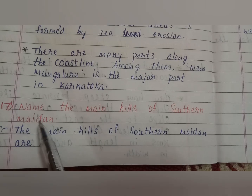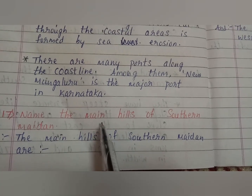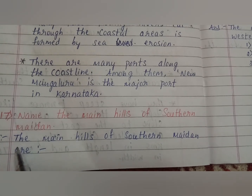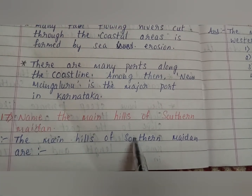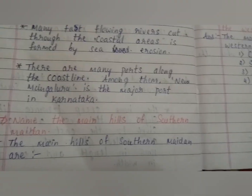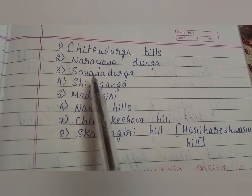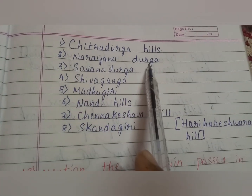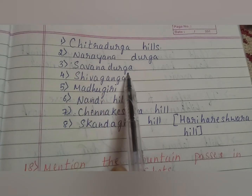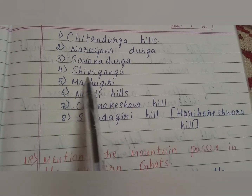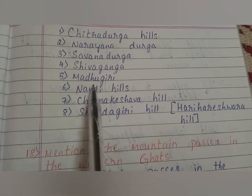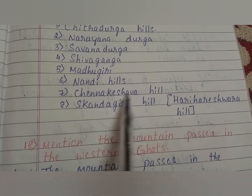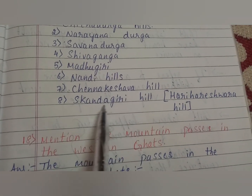Next question: name the main hills of Southern Maidan. Answer: the main hills of Southern Maidan are Chitradurga hills, Narayana, Shivanadurga, Shivaganga, Madugiri, Nandi hills, Channakeshava hill, and Skandagiri hill.